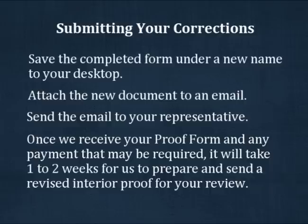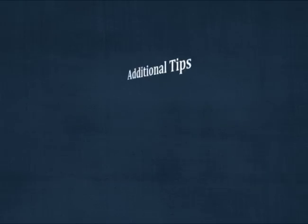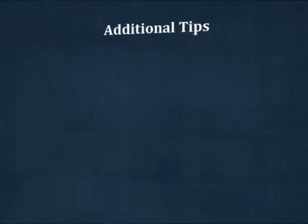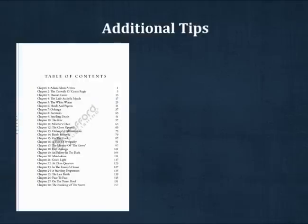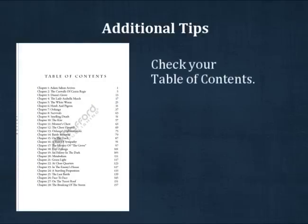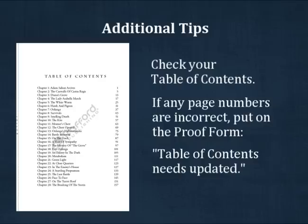When reviewing your interior for errors, here are a few additional things to look for. If your book has a table of contents, make sure the page numbers are accurate. If they are not, you do not need to list every instance where the page numbers are wrong. Just put 'Table of contents needs updated' on your proof form and mark it as a publisher error. We will correct all the page numbers for you.